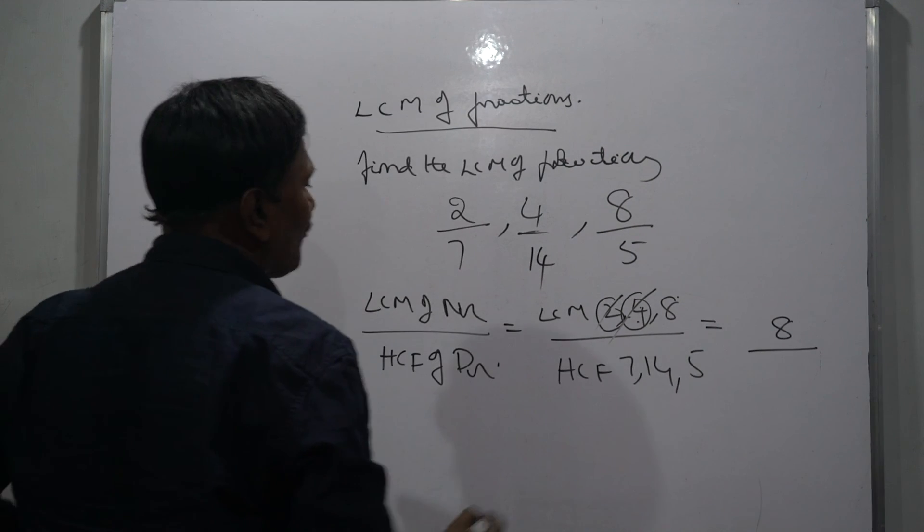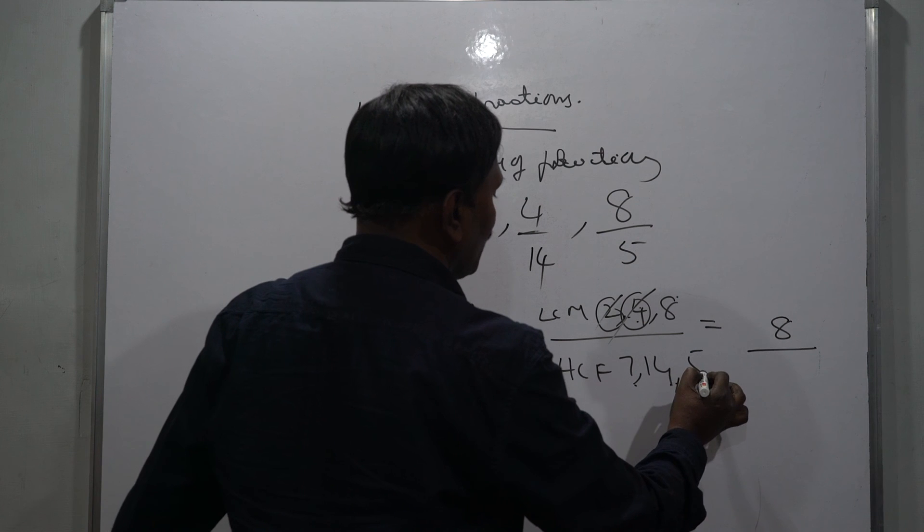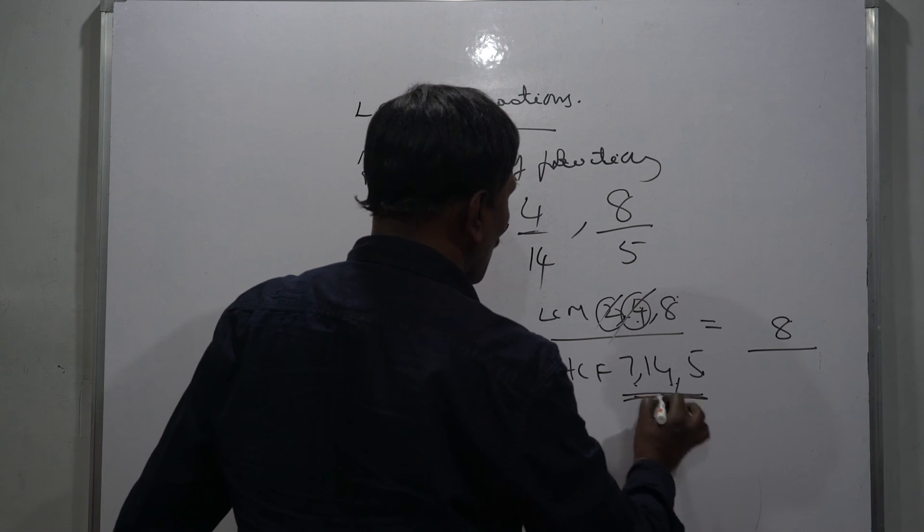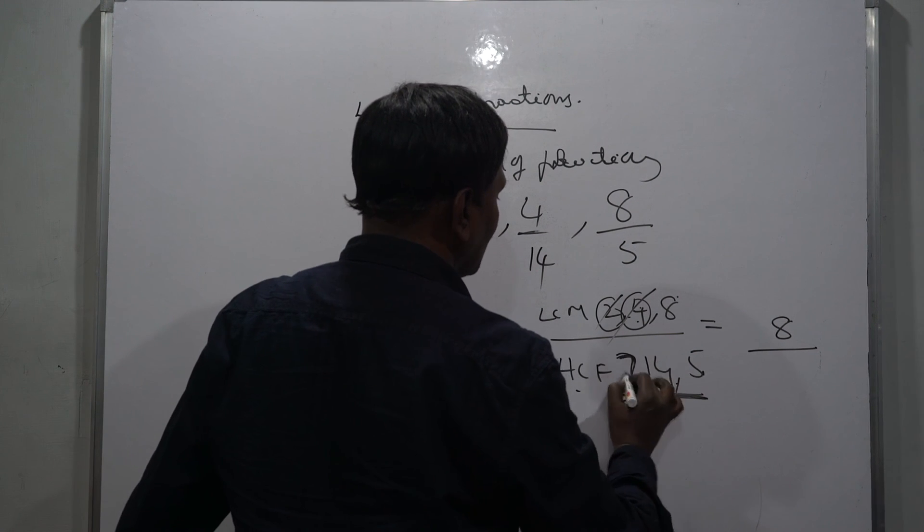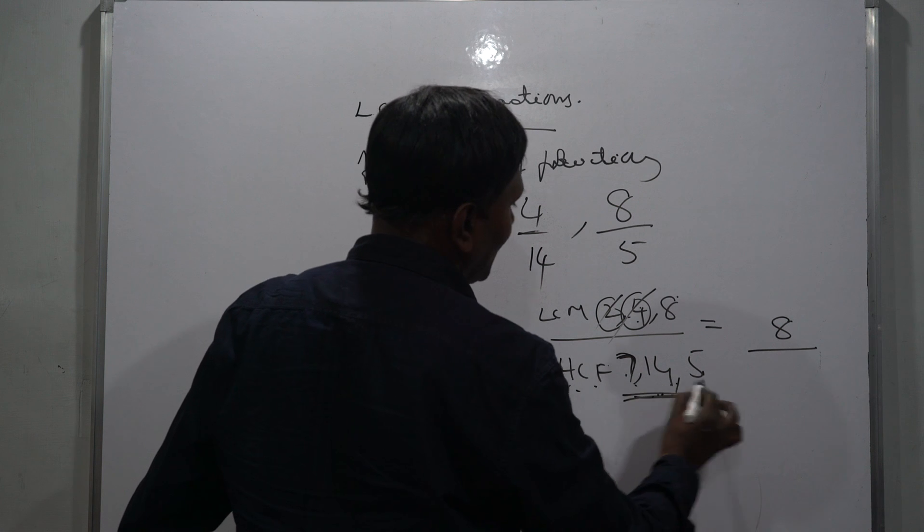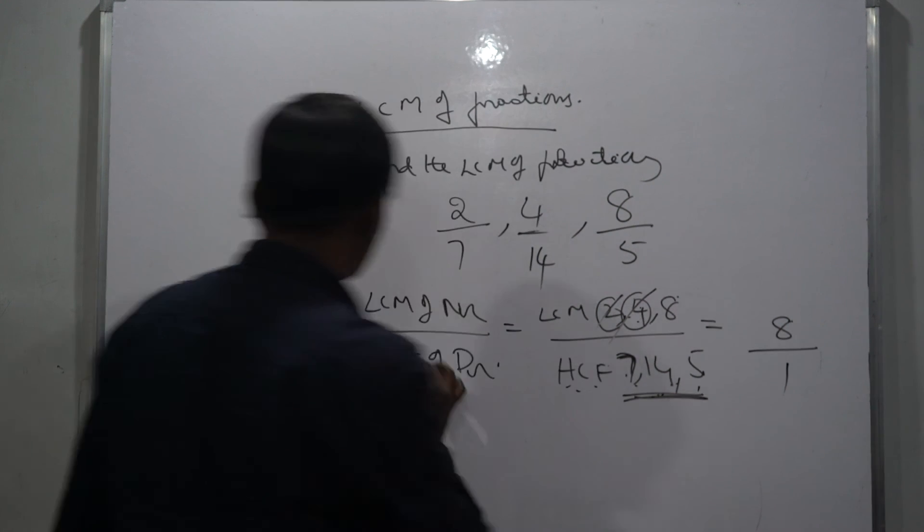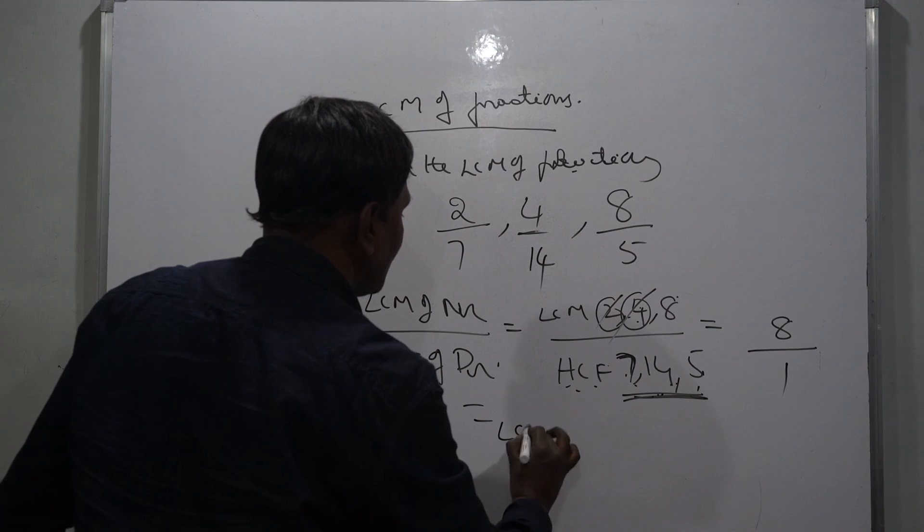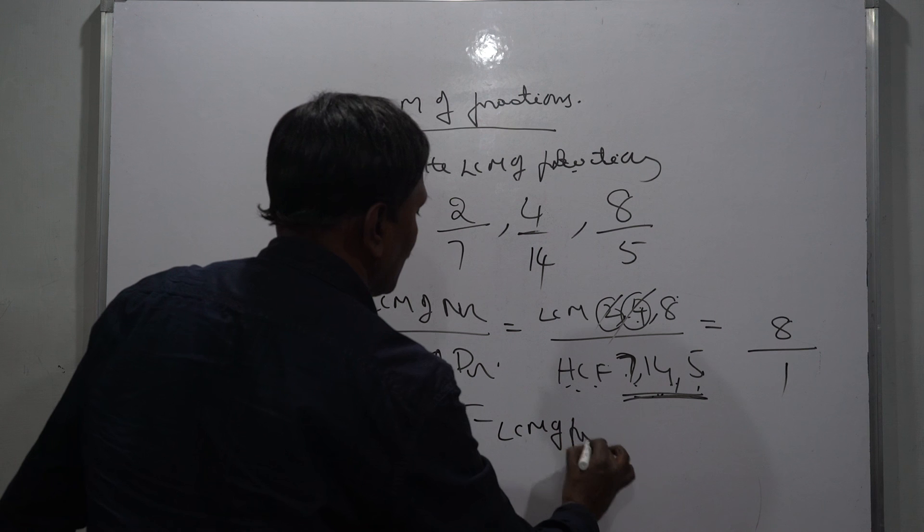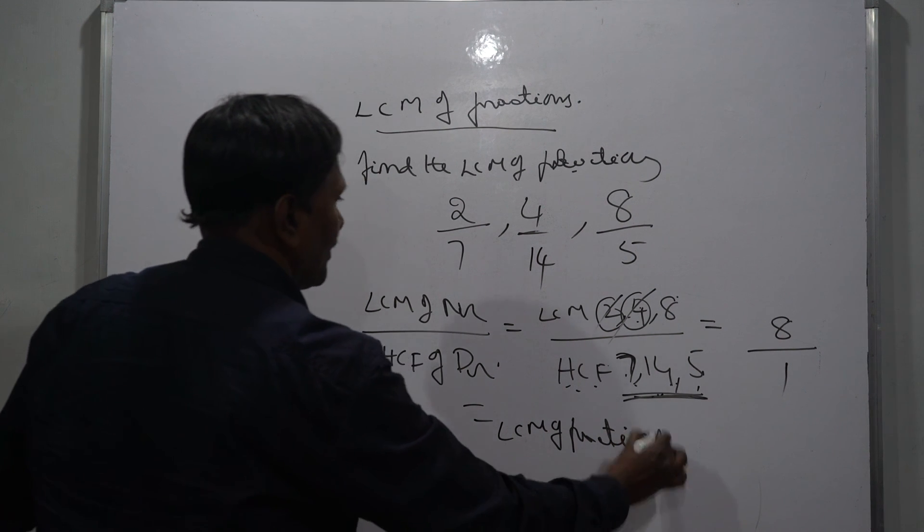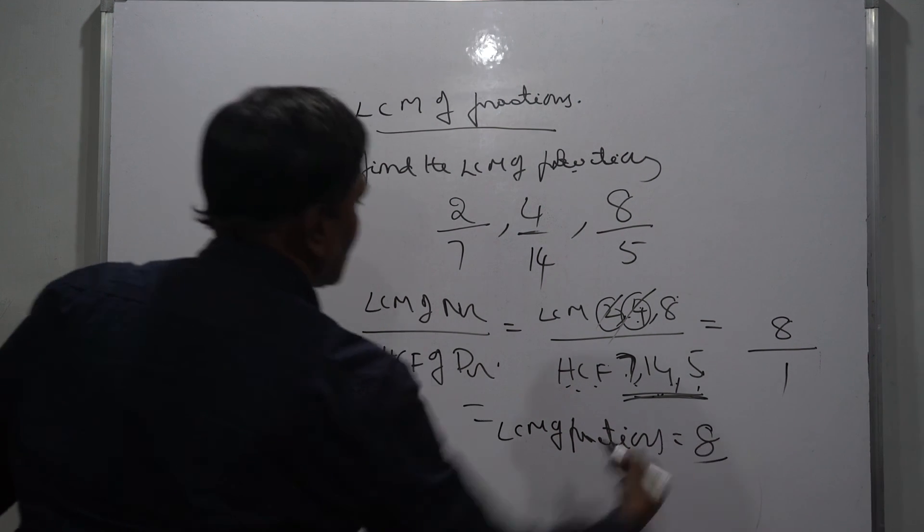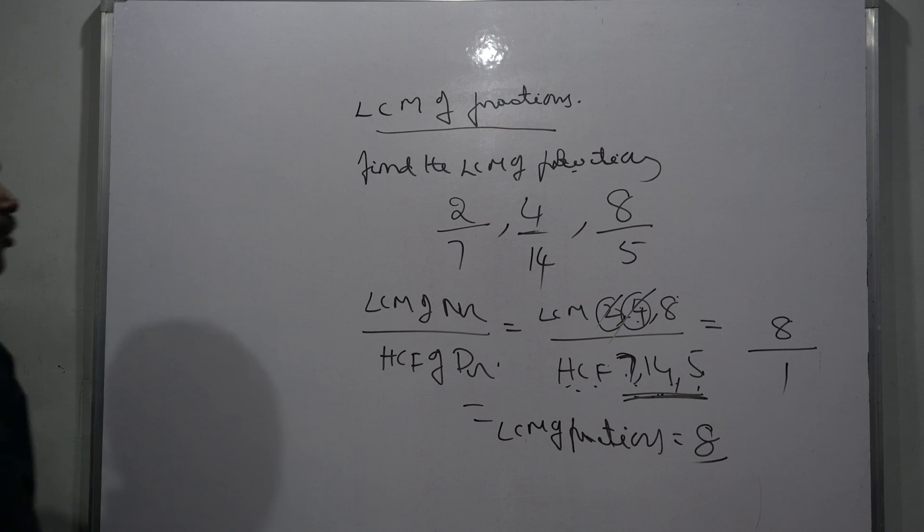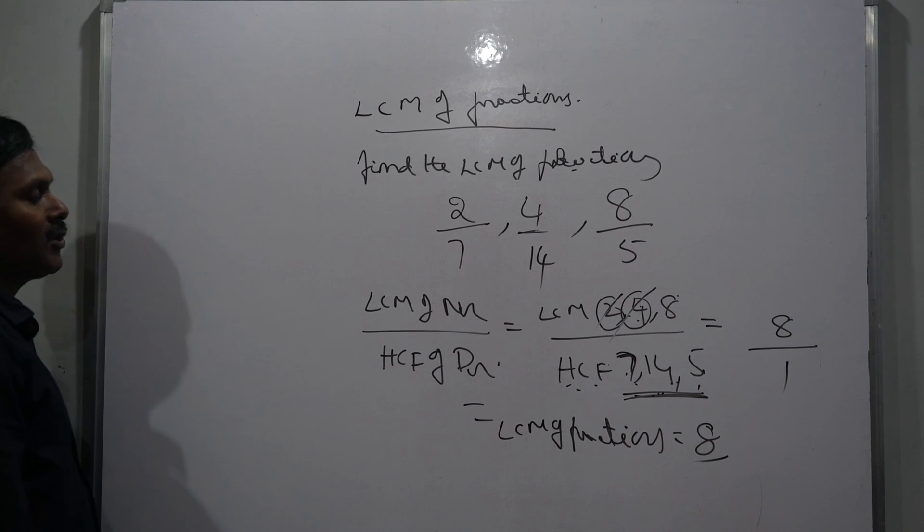HCF of 7, 14, 5 - there are no common factors, so it means HCF is 1. So the LCM of fractions equals 8. I hope you understood well.